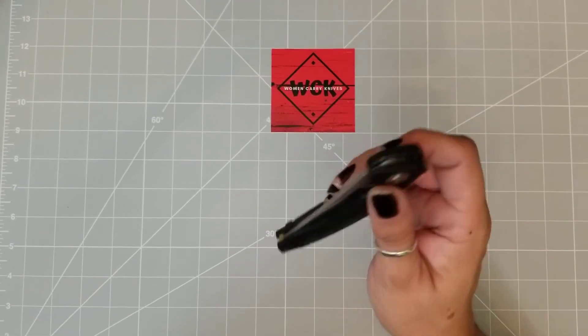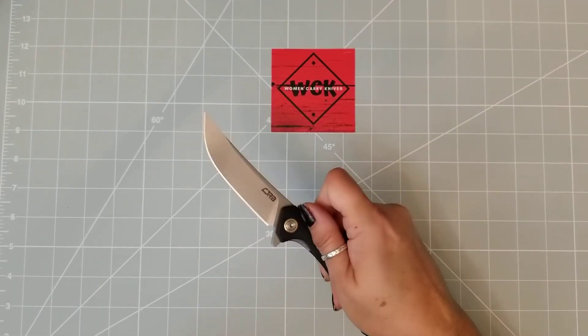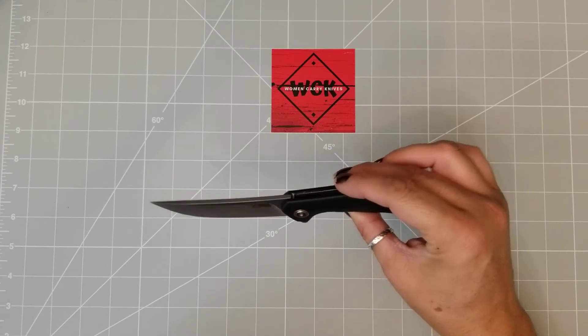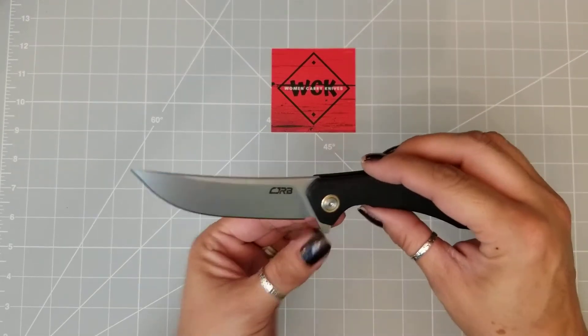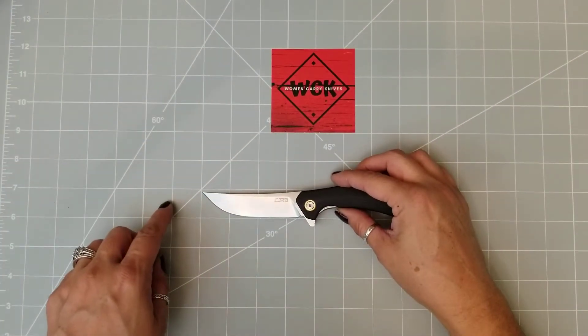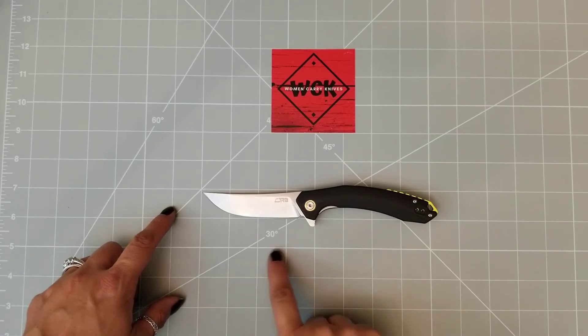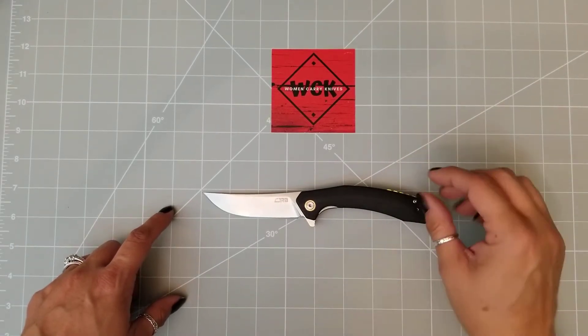This is a fun knife, it's smooth. It's got a beautiful shape to it. Now, your blade length total is one, two, three, three and a half, three and three quarter inch blade.